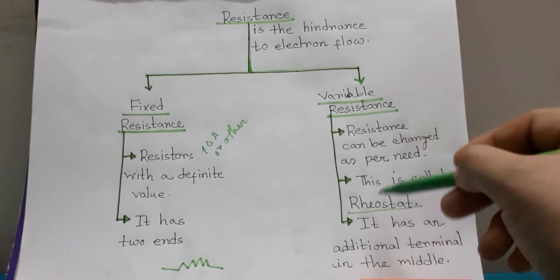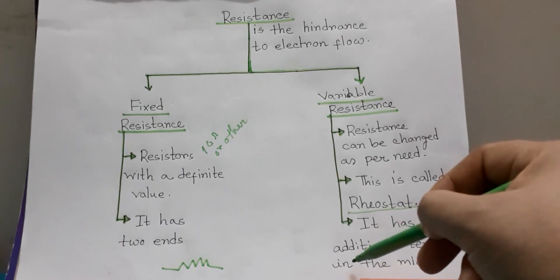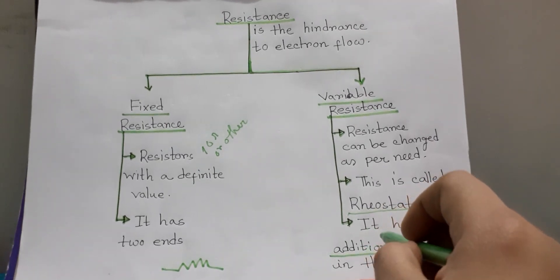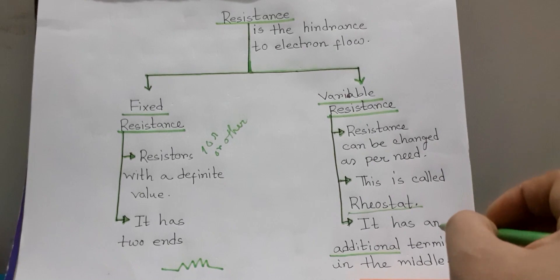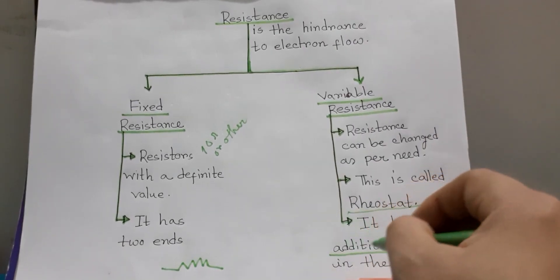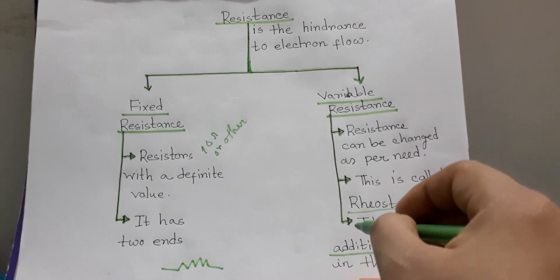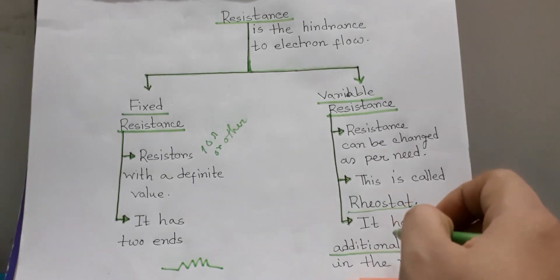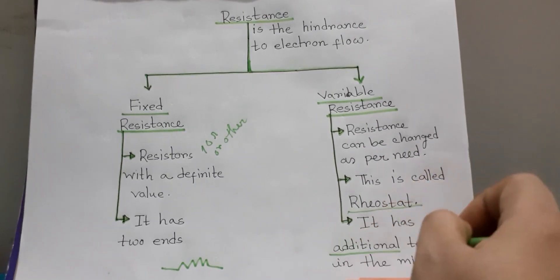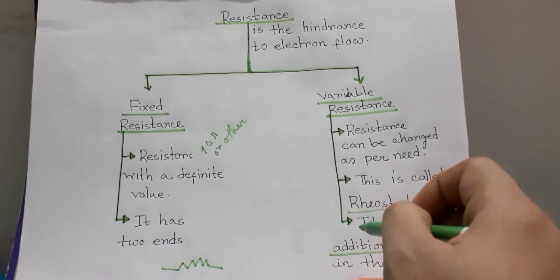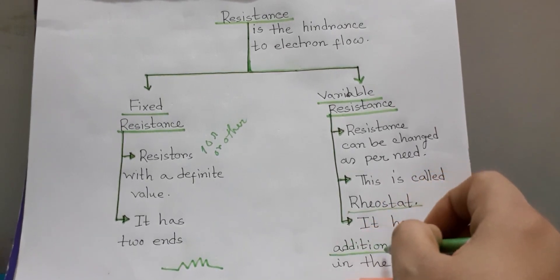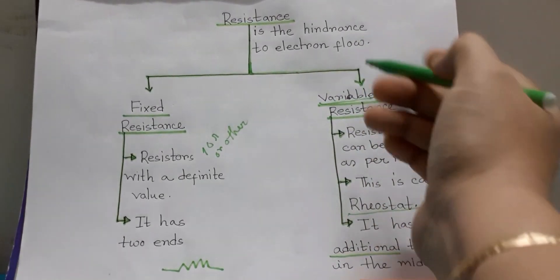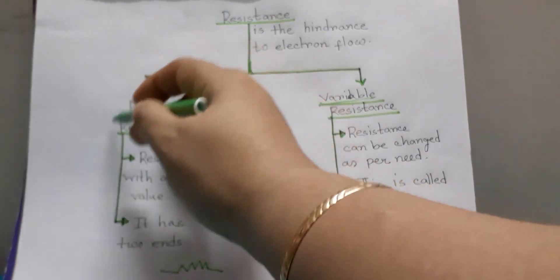A third characteristic of variable resistance is that it has an additional terminal in the middle, meaning we can add or remove extra resistance as per our need. In a circuit, if we need more electricity, we remove resistance from the additional terminal. If we need less electricity, we add extra resistance. So variable resistance means we can change the value of resistance, whereas fixed resistance cannot be changed.